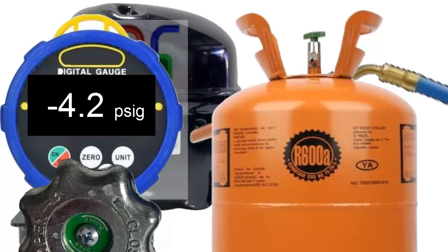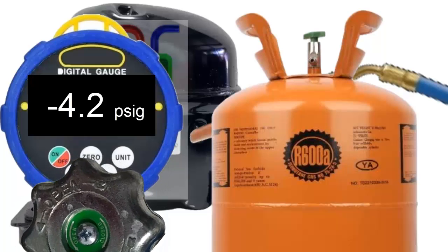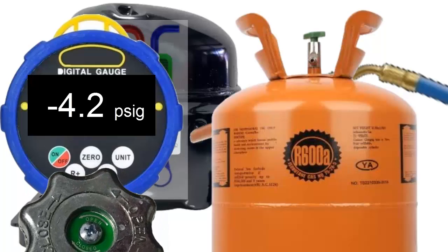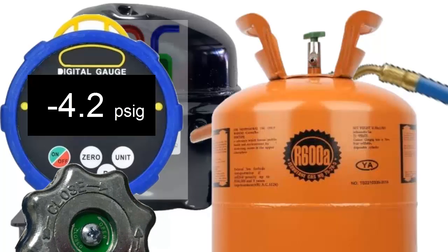For R600A, the pressure on your gauge should be above, but very close to negative 4.2 pounds per square inch. For R600A, the pressure on your gauge should be above, but very close to 5.5 pounds per square inch.